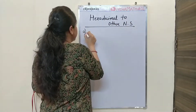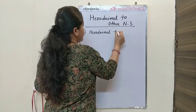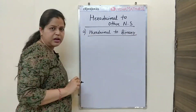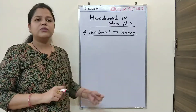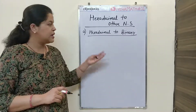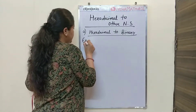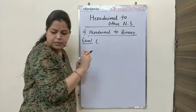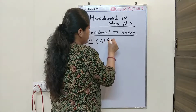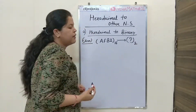Firstly, I am taking hexadecimal to binary conversion, which means suppose you have a number having base 16 and you want to convert that number into binary number system having base 2. We will discuss the complete procedure with the help of an example. I am taking the number AFB2 having base 16 and want to convert it into binary number system having base 2.